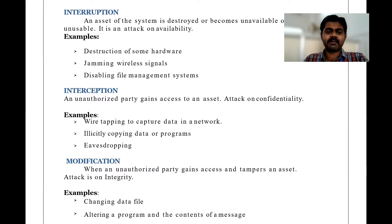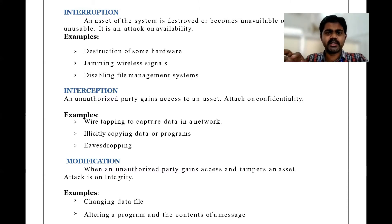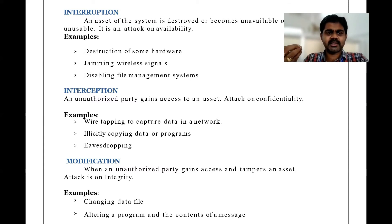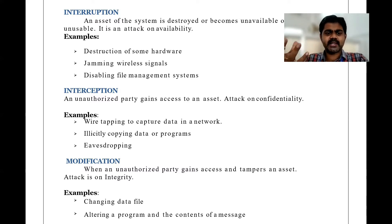Examples of interception include: wiretapping to capture data in a network — an unauthorized person tries to capture confidential data from your network. Also, illicitly copying data or programs, meaning the unauthorized person copies your data and programs. And eavesdropping. All these come under interception.